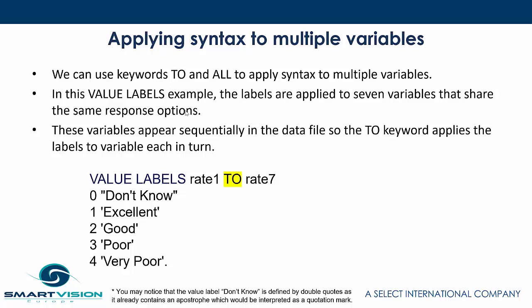They may have different variable labels, they may have different variable names, but they all share the same response options. You could do the same thing with regard to missing values — if you need to apply a missing value to a whole group of variables in one go, you could use the TO command. So here we're saying value labels should be applied from rate one to rate seven, and because they appear in order within the data set, it will apply them inclusively. They're all contiguous in the data set and we'll end up with seven fields with these five different value labels attached to them.